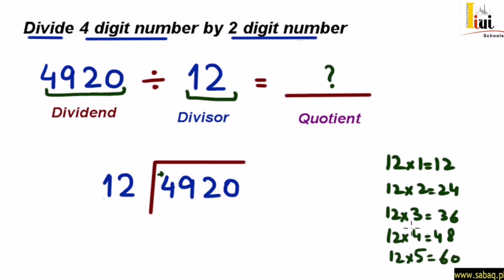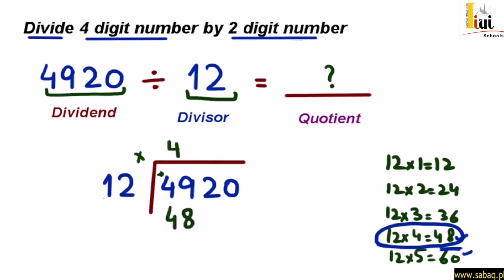अब अगर देखा जाए, तो यहाँ पर 49 जो है, वो 48 और 60 के दर्मियान में आता है। तो यहाँ से हमें पता चला कि 49, 12 के टेबल में नहीं आता। हमने 49 से छोटे नंबर वाला डिजिट लेना है। यहाँ पर हम लिखेंगे quotient में 4, और 12×4 = 48 को नीचे लिखेंगे। 60 नहीं लिया क्योंकि हम 60 को 49 में से minus नहीं कर सकते। तो 49 में से 48 minus करना है: 9 minus 8 = 1।